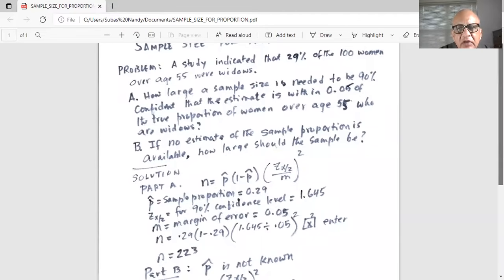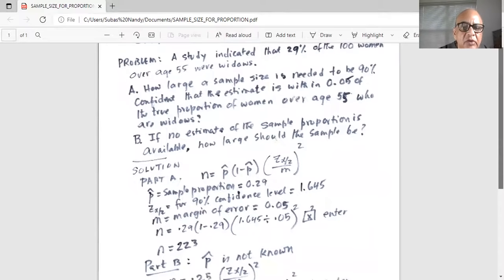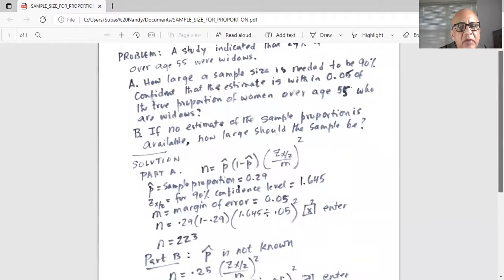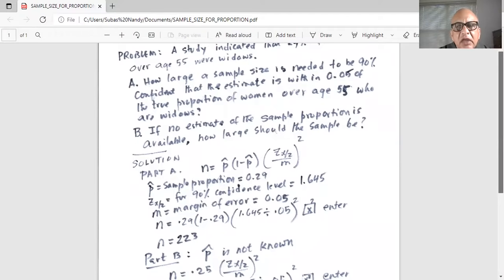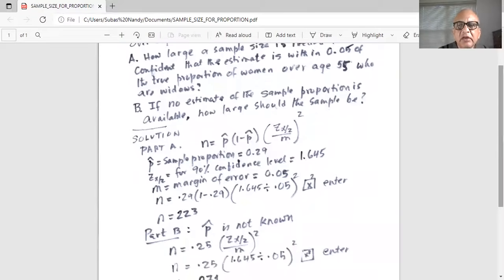Remember the margin of error is the difference between sample proportion and population proportion and that is given as 0.05. So we will utilize the formula n equal to p hat times 1 minus p hat times in parenthesis z alpha by 2 divided by m and the whole thing is squared. So how to do this in the calculator?